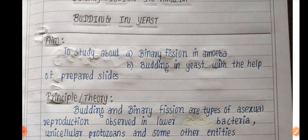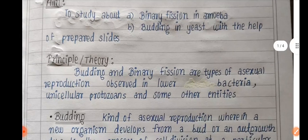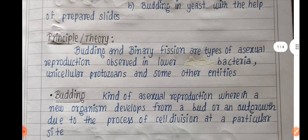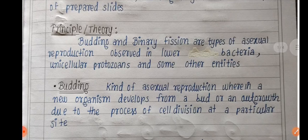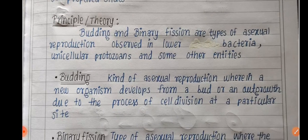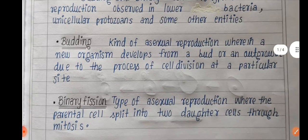Then write the principle. Budding and binary fission are types of asexual reproduction observed in lower bacteria, unicellular protozoa, and some other entities.